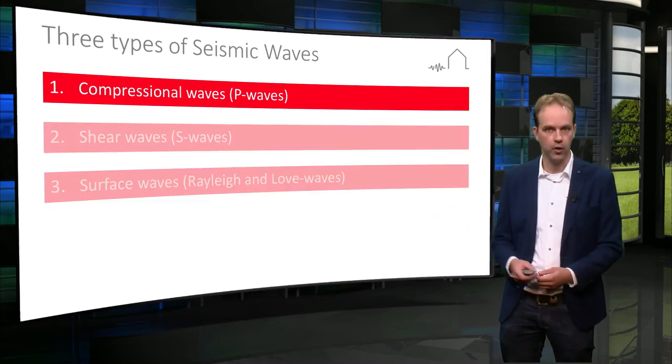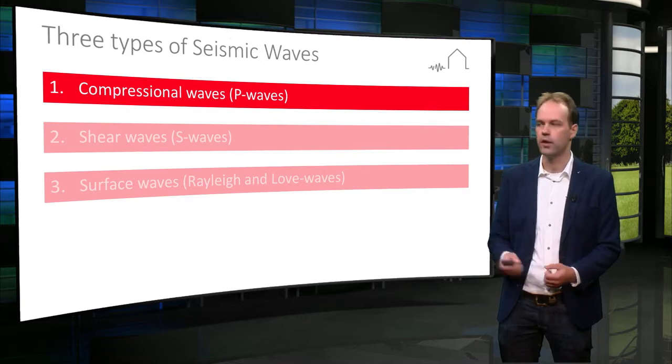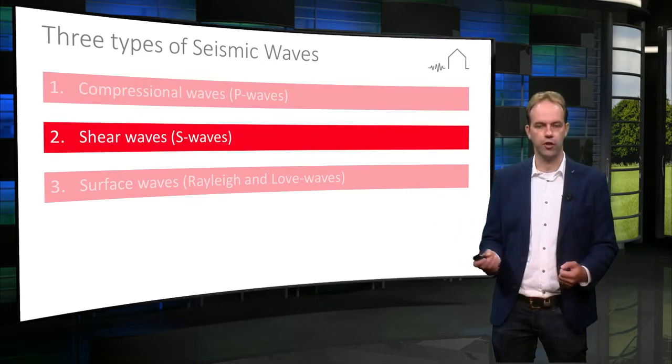The three types are compressional waves, also called p-waves, shear waves, also called s-waves, and surface waves.